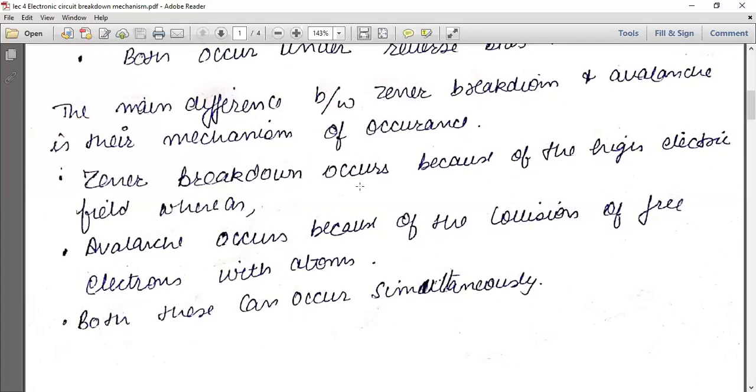Zener breakdown occurs because of high electric field, whereas avalanche occurs because of the collision of free electrons with atoms. So when we talk about zener breakdown, it always occurs because of high electric field. And when we talk about avalanche breakdown, it occurs because of the collision of free electrons present in the semiconductor. This is a major difference between zener and avalanche.